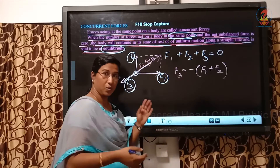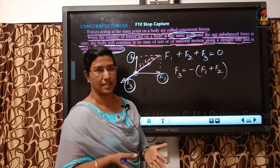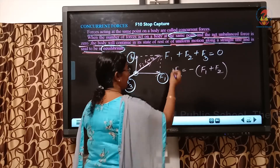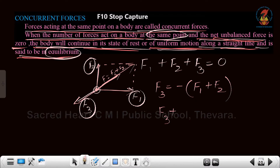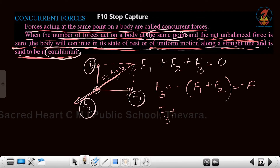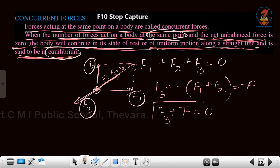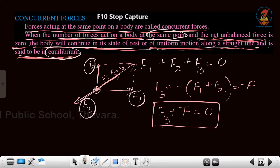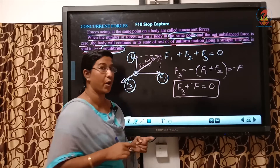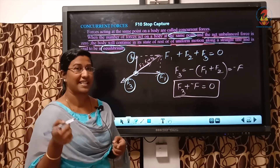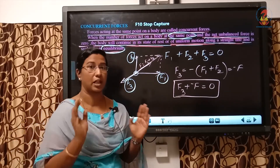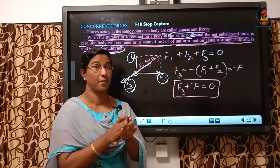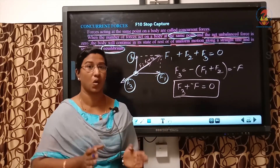You will need this for doing your practicals. We can write F3 plus F equals minus F equals 0. So n number of forces acting on the same point of a body is what we call concurrent force, and the system is said to be in equilibrium if the sum of the unbalanced forces is equal to 0.